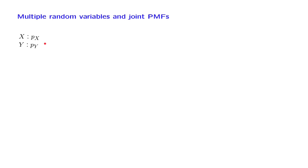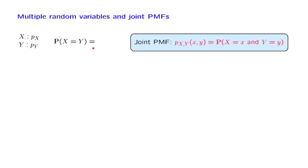But they do not give us any information about how the two random variables are related to each other. For example, if you wish to answer whether the numerical values that the two random variables happen to be equal, and what is the probability of that event, you will not be able to answer this if you only know the two individual PMFs. We will need information that tells us what values of X tend to occur together with what values of Y.